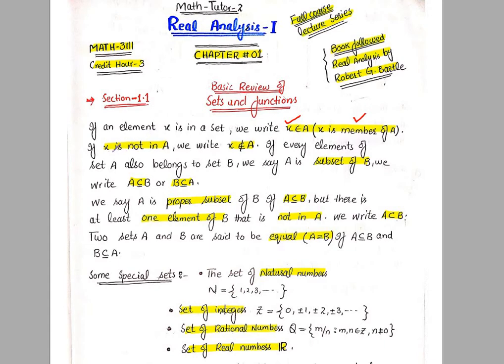If X is not in A, we write X does not belong to A — meaning element X is not an element of that set. If every element of set A also belongs to set B, we say A is a subset of B. We write A ⊆ B and B ⊇ A. This is the symbol of subset.